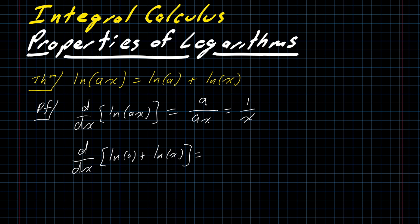For the second one, it's a little bit more straightforward. The derivative of a sum is the sum of the derivatives, so we separately differentiate natural log of a and natural log of x. Well, a is a constant, so the natural log of a is also a constant, and the derivative of a constant is 0. Then the derivative of natural log of x is 1 over x, and of course 0 plus 1 over x is just 1 over x.